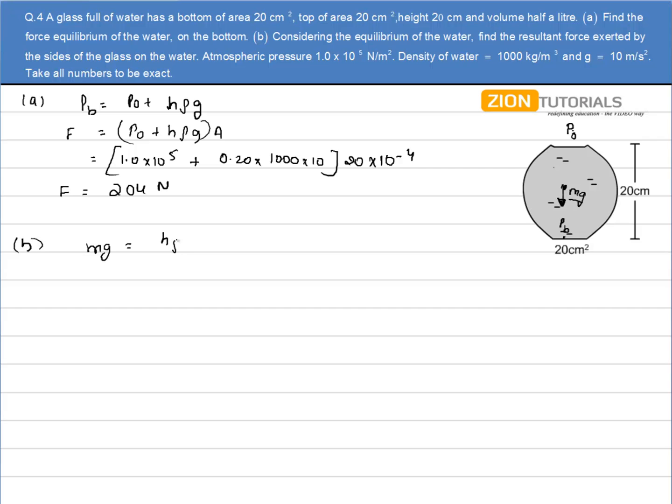h × ρ × g × area of cross section plus the force exerted by the glasses. So just substitute the value. Half a liter, 0.5 liter - we know one liter is equal to thousand centimeter cube, so it will be equal to 0.5 × 10³ centimeter cube of water.